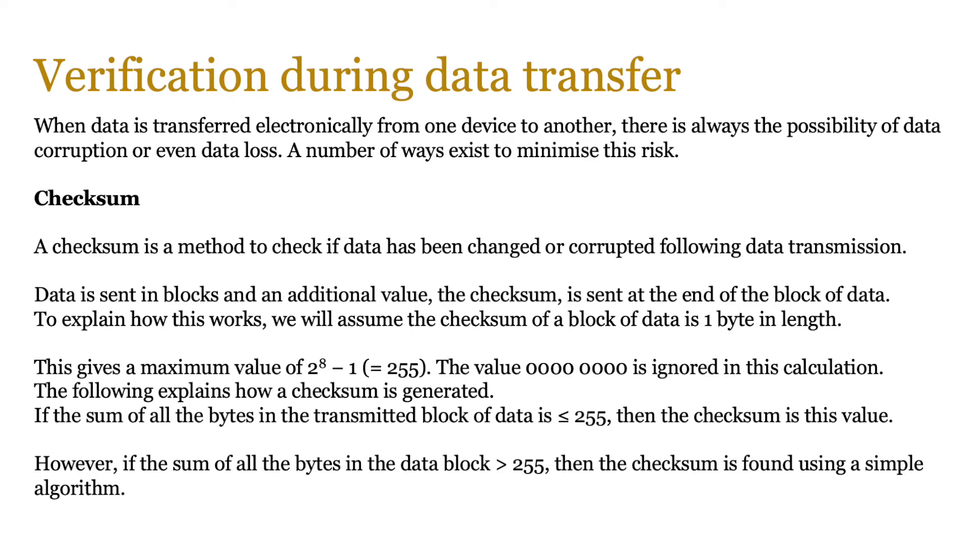Now, we're going to assume that the checksum of a block of data is one byte in length. This basically means that we have a maximum value of 2 to the power of 8, and you take away 1. So 0 to 255 are possible values. The 0 value is ignored, and if we sum all the bytes in the transmitted block of data and it's less than or equal to 255, then the checksum becomes that value. However, if the sum of all the bytes in the block is greater than 255, then the checksum is found using this algorithm.